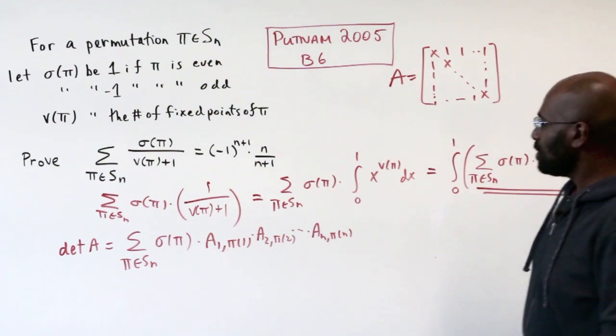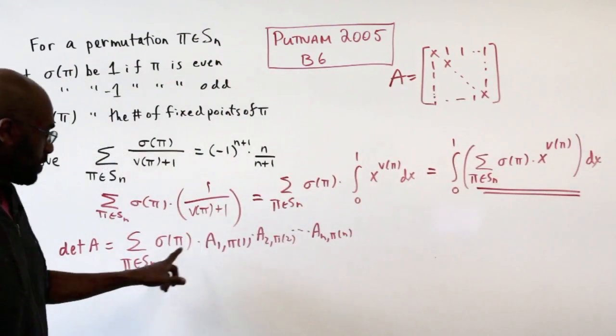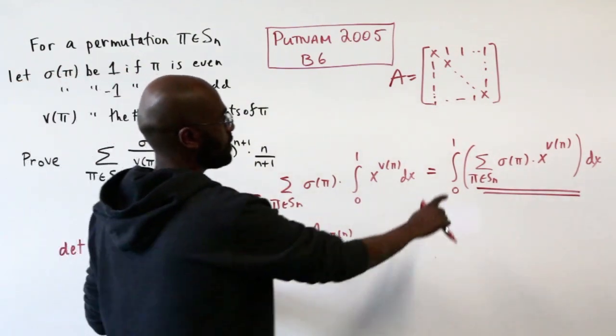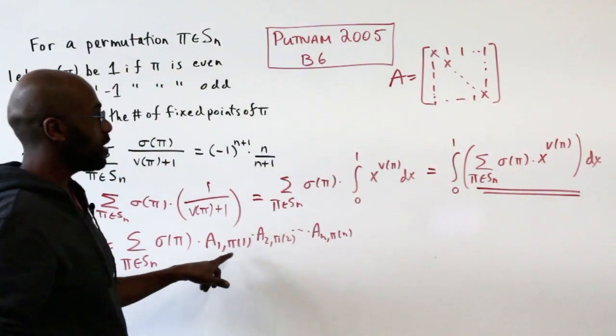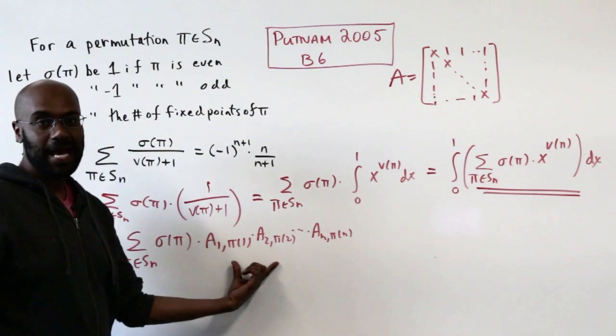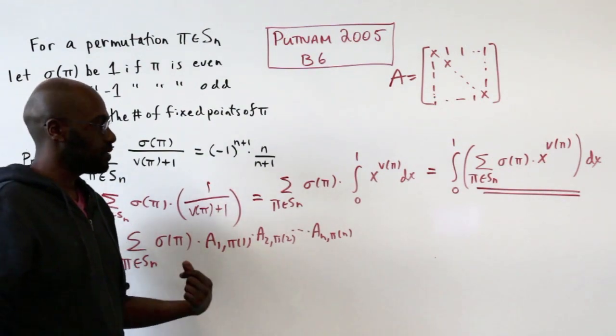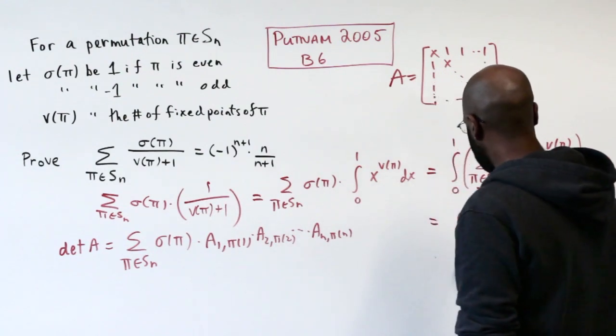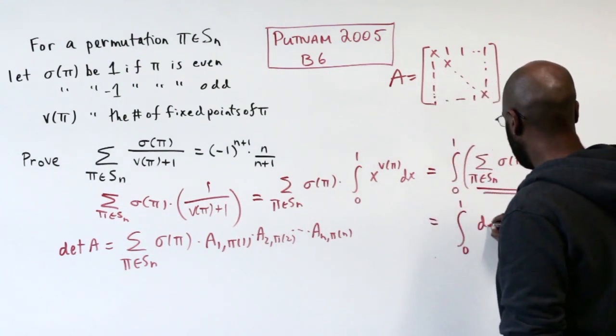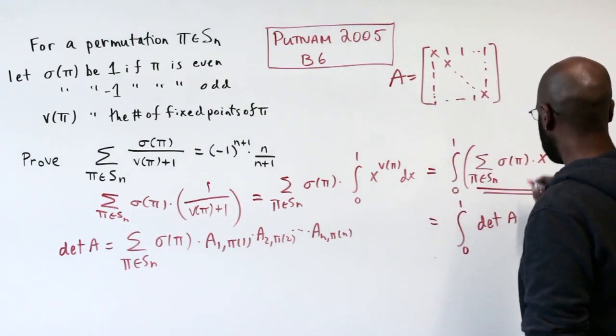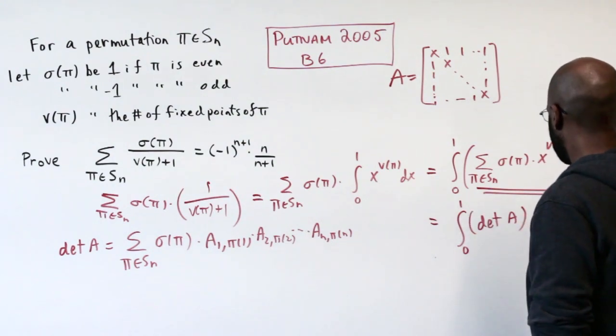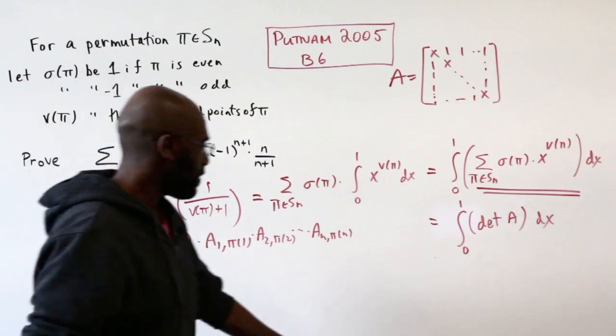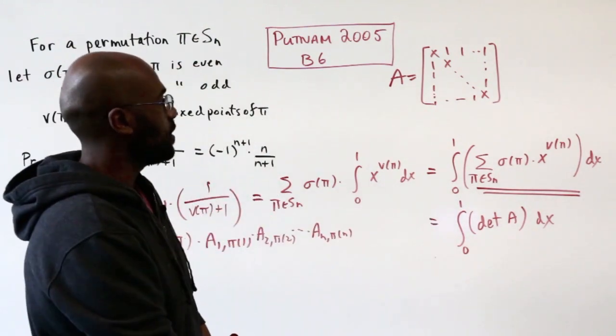If we do that, then for any fixed π, this expression will see an x every time π(i) is i and a 1 everywhere else, so we'll get x to the number of fixed points. So this integral that we're interested in is the integral from 0 to 1 of the determinant of this matrix A, dx. Pretty cool.